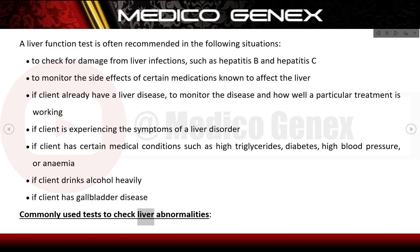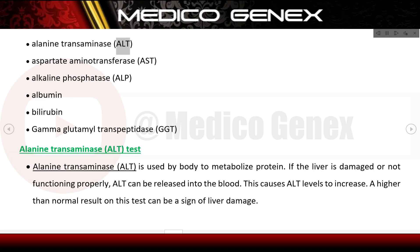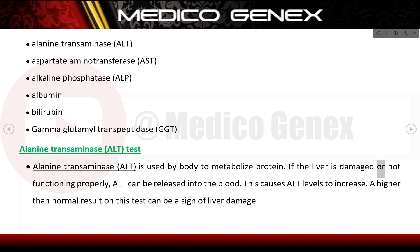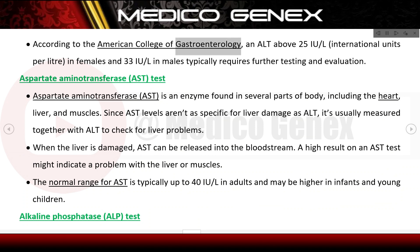Commonly used tests to check liver abnormalities include alanine transaminase (ALT), aspartate aminotransferase (AST), alkaline phosphatase (ALP), albumin, bilirubin, and gamma-glutamyl transpeptidase (GGT). ALT is used by the body to metabolize protein; if the liver is damaged, ALT is released into the blood. An ALT above 25 IU/L in females and 33 IU/L in males typically requires further testing and evaluation.